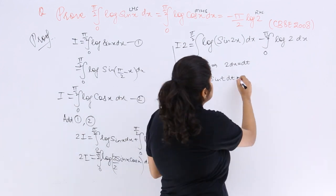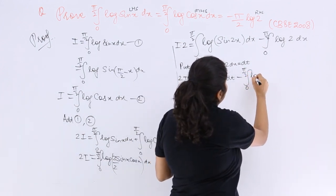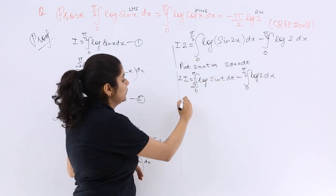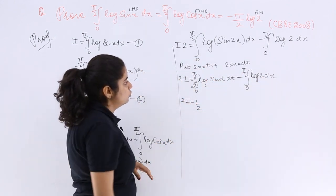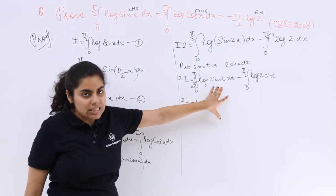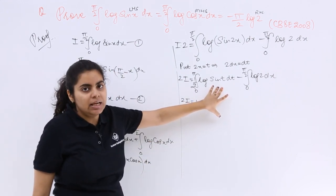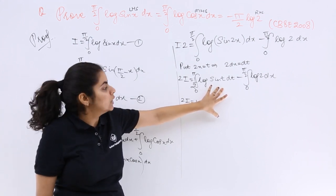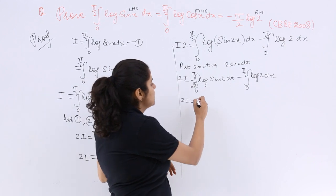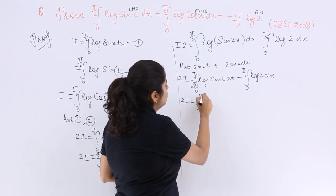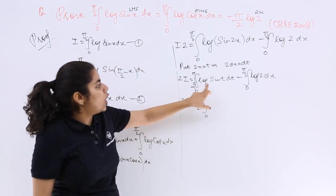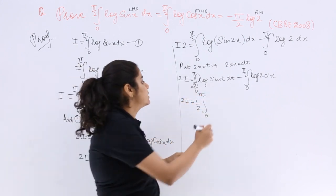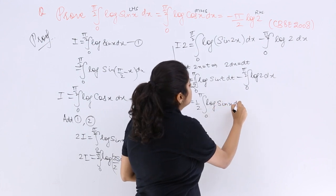Now, minus 0 to π/2, log 2 dx, that we can solve anytime, that I will solve you later. Now see, 2I is equal to 1/2 log sin t. This definitely I cannot solve unless I use some property or some other manipulation. Now you know that 1/2 is outside definitely, 0 to π is there. Now log sin t, with the same limits I can write it as log sin x dx.